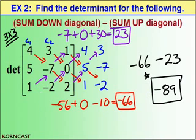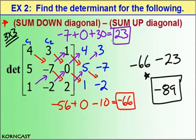Please make sure you understand that this is quite a bit different from a 2x2 matrix, but if you follow this little trick, it's essentially the same process: down diagonals — find the products and add them up; up diagonals — find the products and add them up; then subtract the two sums, and you'll get your determinant.